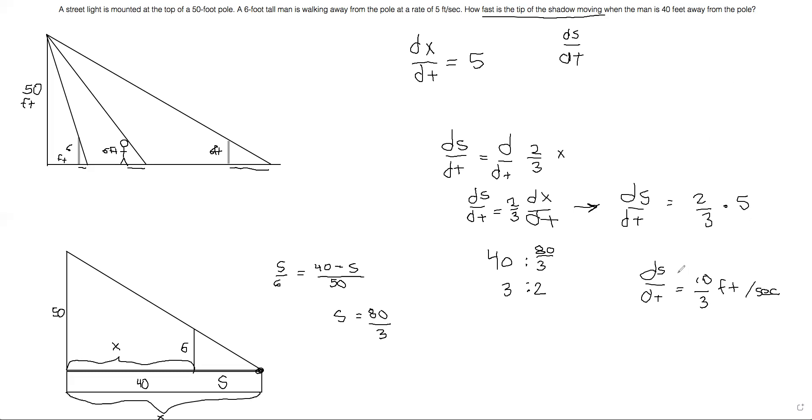Or hang on, this isn't the right answer. This would be the length of the shadow alone. But we're going to need to describe the entire thing because we have not only the distance the man's traveled, but the distance that the shadow has also traveled. So this only covers the distance of the shadow, which means to find the total distance when the man is 40 feet away, we're going to need to add them together. So the tip of the shadow is moving at a rate of five plus 10 thirds feet every second.